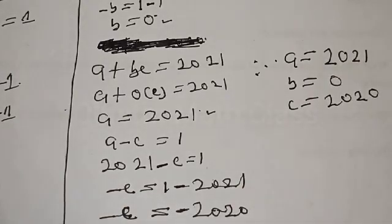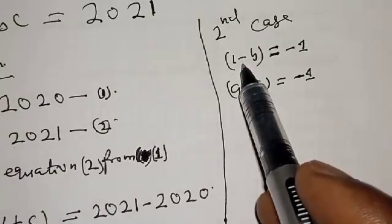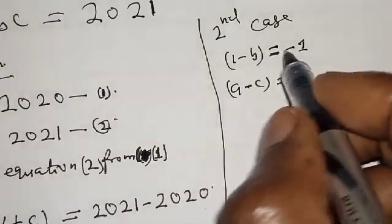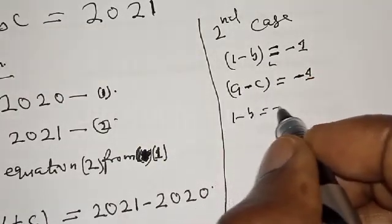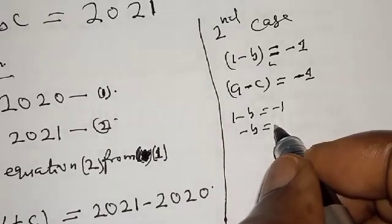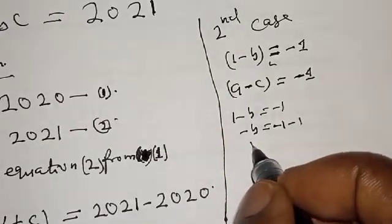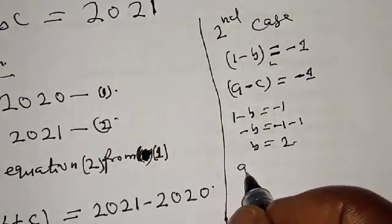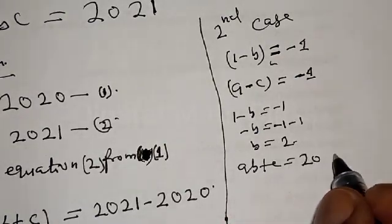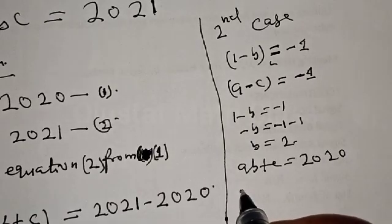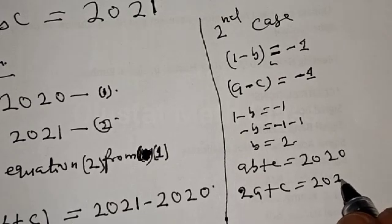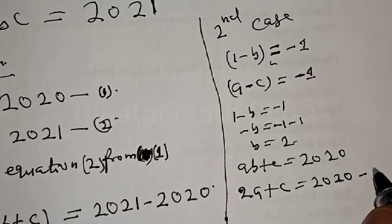Now let's solve the second case: 1 minus B equals minus 1, and A minus C equals minus 1. From 1 minus B equals minus 1: minus B equals minus 2, therefore B equals 2. Substituting B equals 2 into equation 1: 2A plus C equals 2020 — call this equation 3. Substituting B equals 2 into equation 2: A plus 2C equals 2021 — call this equation 4.